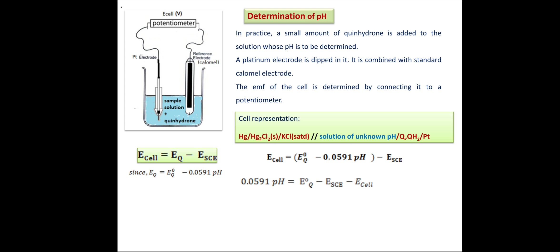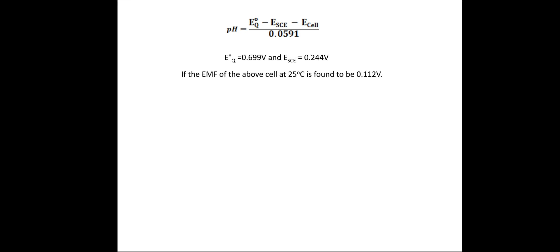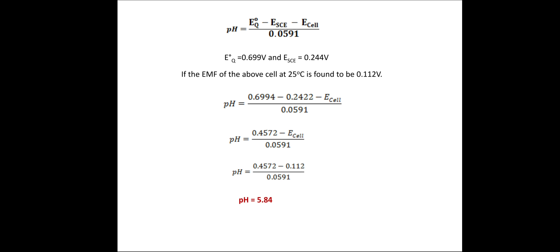After rearrangement, the expression for pH is: pH = (E°_Q − E_calomel − EMF) / 0.0591. Using this expression we can calculate the pH of the solution. For example, if the standard electrode potential of the quinhydrone electrode is 0.699 V, the electrode potential of the standard calomel electrode is 0.244 V, and the EMF of the cell at 25°C is 0.112 V, substituting these values gives pH = 5.84.